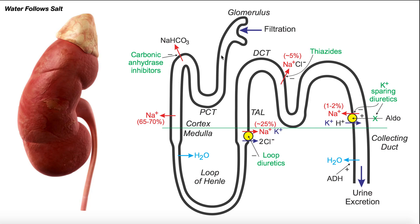After the glomerulus, we enter the proximal convoluted tubule, or the PCT. From there, we enter the nephron loop. It comes down, loops around and comes back up. This nephron loop is also called the loop of Henle, and it has two parts: a descending component, which goes down, and an ascending component that comes back up. After the loop of Henle, we have the distal convoluted tubule, and then finally over here we have the collecting ducts.